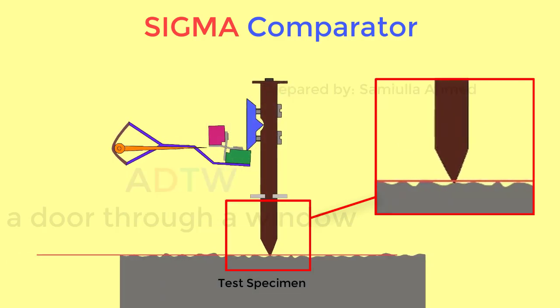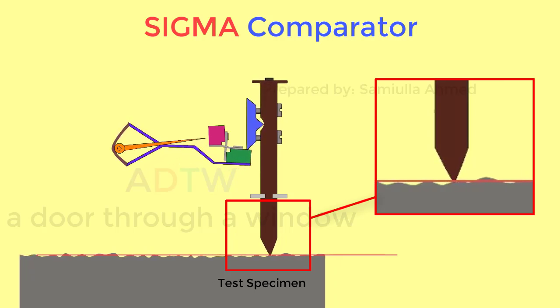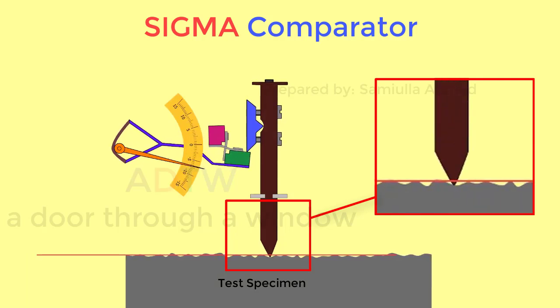The lowering or rising of the plunger will make the knife edge to move up or down and this makes the movable block to deflect which in turn deflects the Y arm which turns the drum. And this results in the movement of the pointer which shows the reading on the calibrated scale.